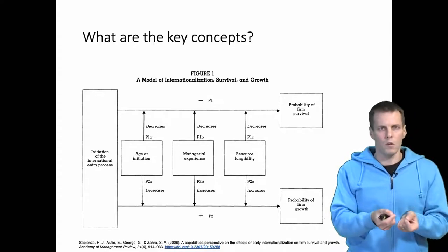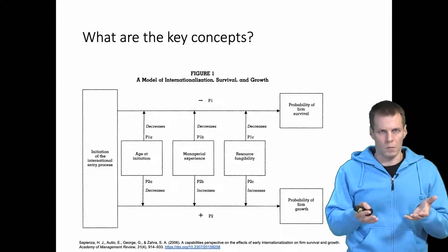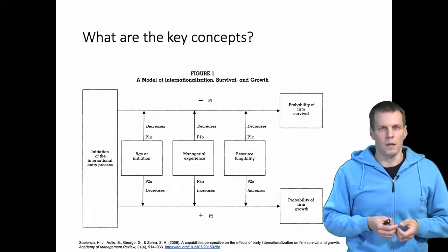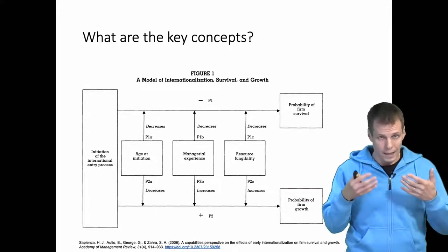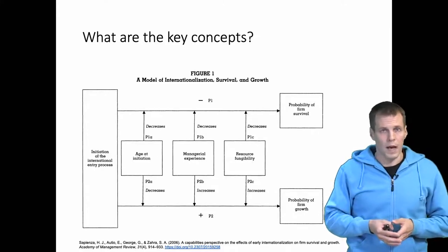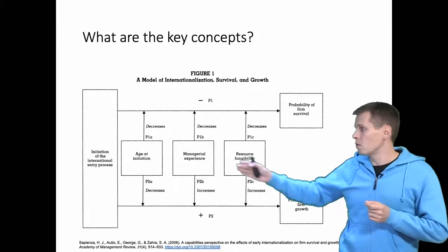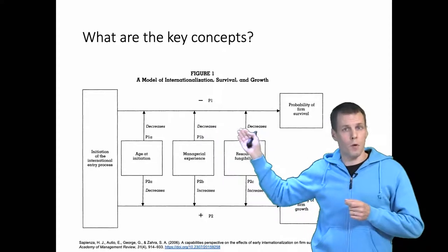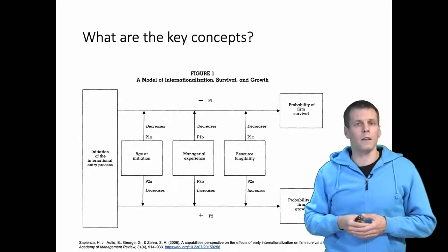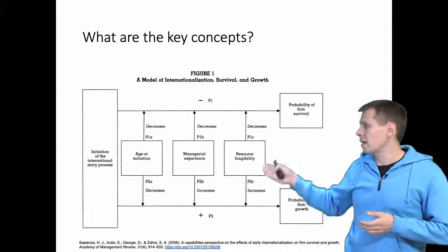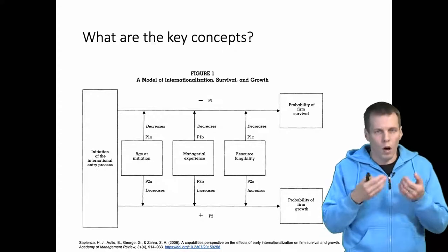So each of these propositions, there are eight in total, is a causal claim that the article also explains. Once you start to read an article, the first thing that you need to understand or identify is what are the key concepts and then how are they defined. It's pretty obvious that because each of these boxes presents a concept, these boxes at least should be considered the key concepts. And once we have the key concepts, we need to identify how are the concepts causally related. So each of these arrows presents a proposition which is basically a causal statement. So the article says that once you decide to go international, that actually decreases the probability of survival.